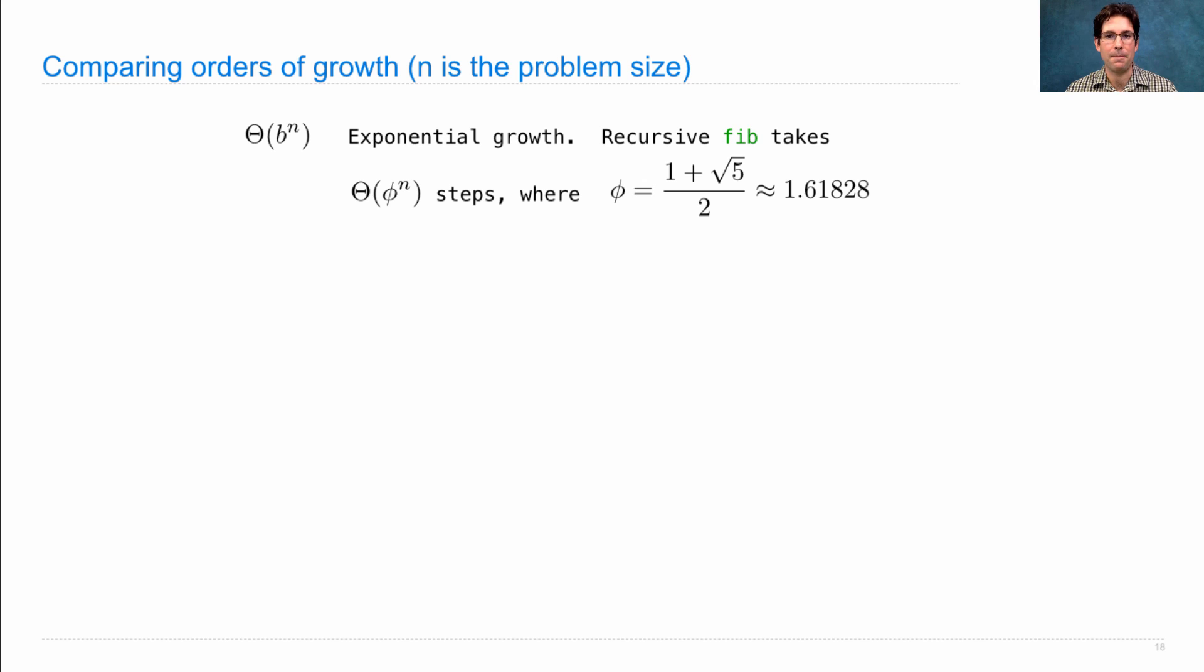The recursive Fibonacci implementation that we've been talking about so much is one of these. So we saw that even for fib 35, it just does an enormous amount of work. And that's because the number of steps required to compute fib n is theta of phi to the n, where phi is 1.618.